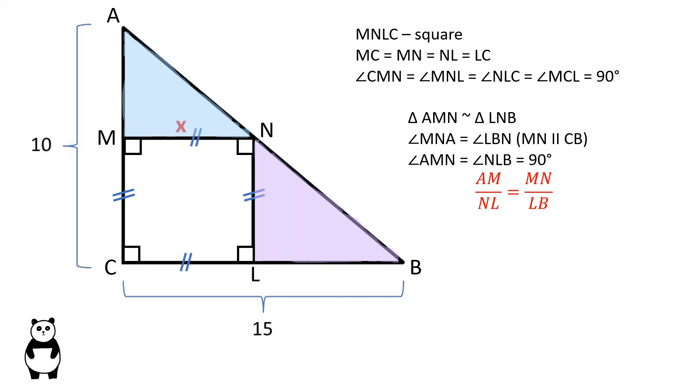In similar triangles, the corresponding sides are proportional, therefore AM over NL is equal to MN over LB.